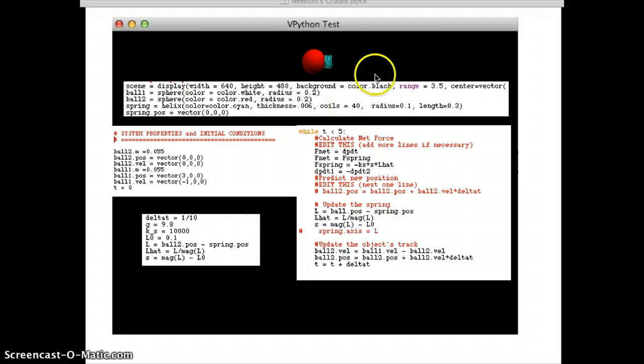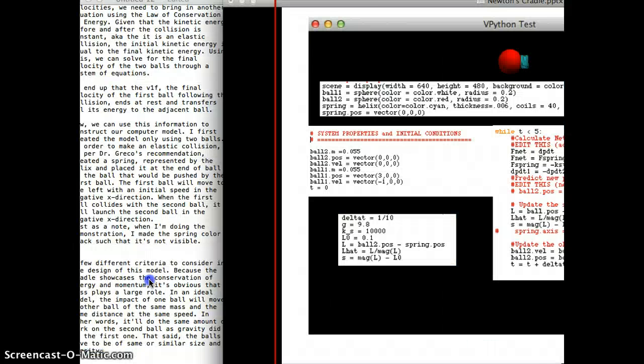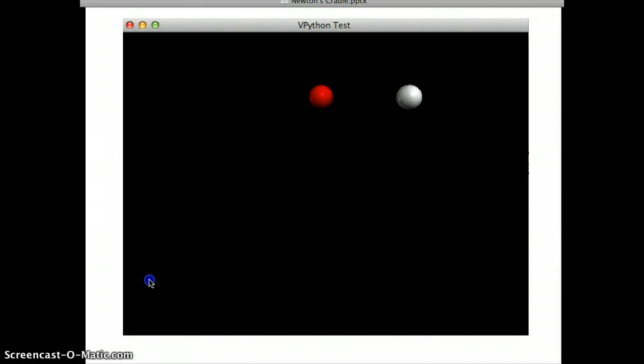I first created the model only using two balls. In order to make an elastic collision, I, per Dr. Greco's recommendation, created a spring, represented by the helix, and placed it at the end of the ball too, the ball that would be pushed by the first ball. The first ball will move to the left with an initial speed in the negative x direction. When the first ball collides with the second ball, it will launch the second ball in the negative x direction. Just as a note, when I'm doing the demonstration, I made the spring color black such that it's not visible. Right now it's cyan. And here's the demonstration.